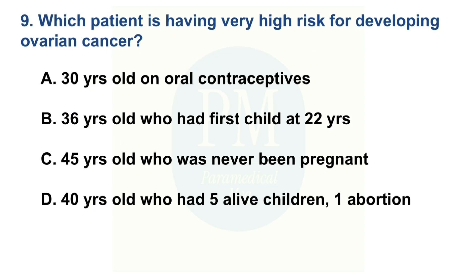Which patient is at very high risk for developing ovarian cancer? Option A: 30-year-old on oral contraceptives. Option B: 36-year-old who had first child at 22 years. Option C: 45-year-old who has never been pregnant. Option D: 40-year-old who had 5 alive children and one abortion. The correct option is Option C: 45-year-old who has never been pregnant.